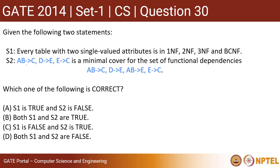Statement two: AB determines C, D determines E, E determines C is a minimal cover for the set of functional dependencies: AB determines C, D determines E, AB determines E, E determines C.